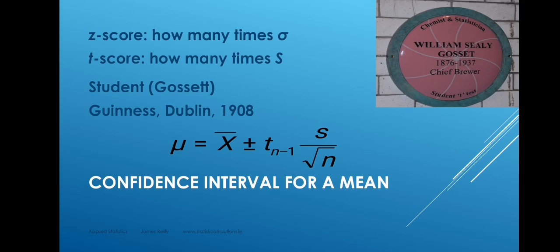A t-distribution is like a normal distribution, but you don't just happen to know the standard deviation. So it has the same familiar bell shape, but somewhat fatter tails because there's more uncertainty associated with it. In fact, there's a different t-distribution for every different number of degrees of freedom, n minus 1. That's why we write the little subscript n minus 1 beside the t — to remind you, when you're finding a t-value, to find the appropriate one with the correct number of degrees of freedom.